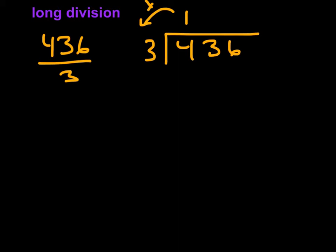So this is going to be multiplication. 1 times 3 is 3. I write it right under that first number. Now I'm going to subtract — so 4 minus 3 is positive 1. I bring down the next number, the 3. Now we repeat the process. How many 3s are in 13? 3 times something has to be less than 13, so that's going to be 4. 4 times 3 is 12.